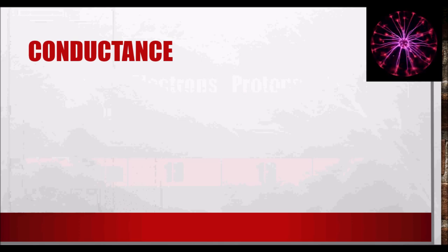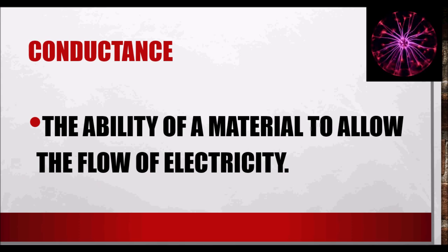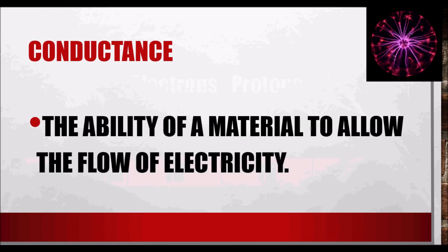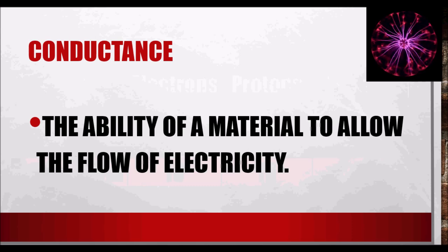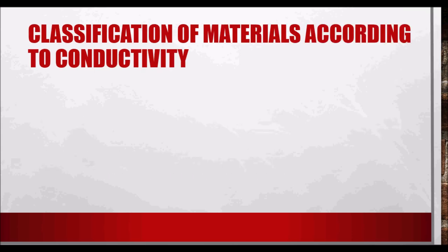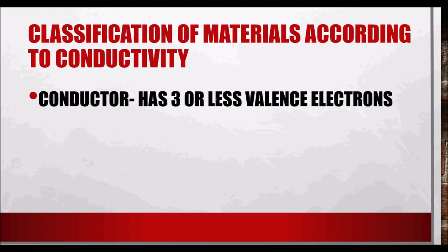In electricity, we don't focus much on isotopes because our focus is on electrons and valence electrons. Conductance is the ability of a material to allow the flow of electricity. This is the ability of a material to let electricity flow. Conductance depends on how many valence electrons the material has. If conductance is high, the material can easily allow the flow of electricity. That's why the most common materials used for wires are elements with high conductance.